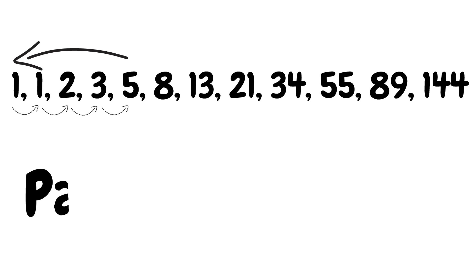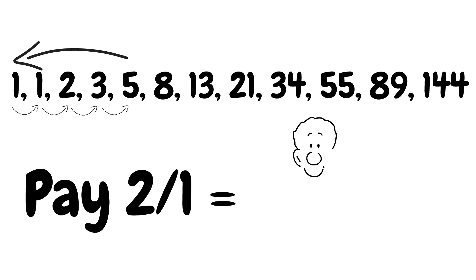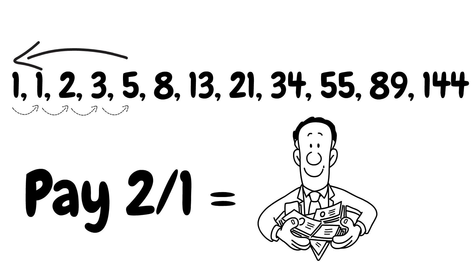If we are paid 2 to 1 on our bets, the winnings will cover our previous losses and some additional profit. And the cherry on the top of the Fibonacci sequence is that we will receive more profit the further down the sequence we go, almost as if we're being rewarded for our bravery.